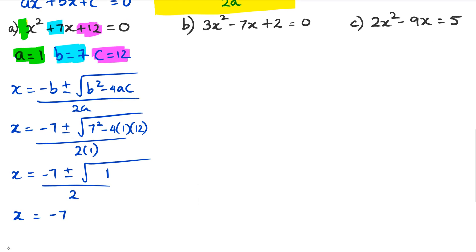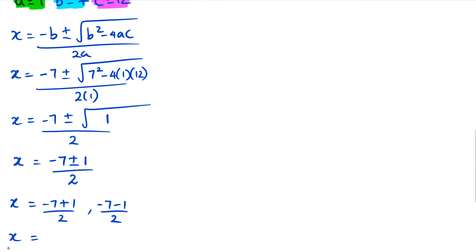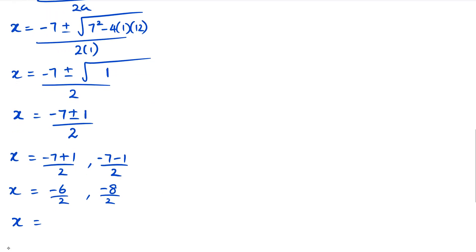So x is equal to negative seven plus or minus the square root of one, which is just one, divided by two. Remember that when you take a square root of any number you will have two answers — the positive version and the negative version. So we split it up: the first answer uses the plus, and the second uses the minus. We end up with negative six over two and negative eight over two, which simplifies to x equals negative three and negative four.